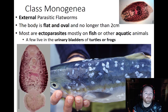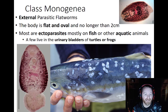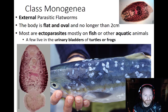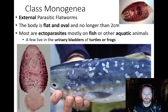Now let's look into Class Monogenea. These are external parasitic flatworms, mostly found on fish and sometimes amphibians like frogs. Their body is flat, but rather than being long, they're actually oval shaped. This has to do with the fact that they need to be more streamlined so they don't get pulled or knocked off of their host.